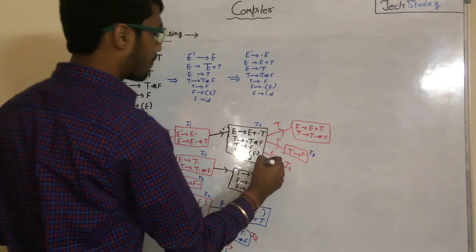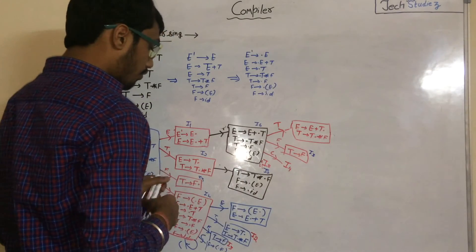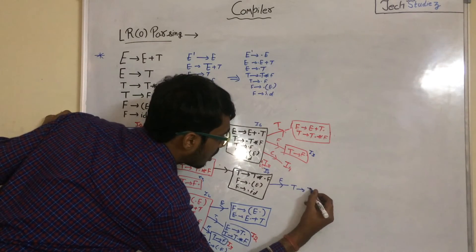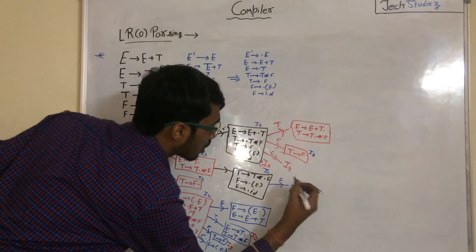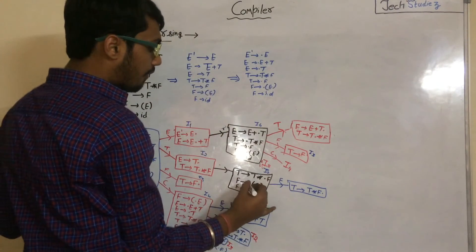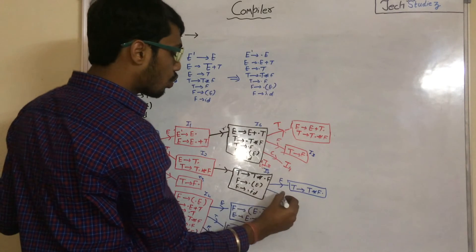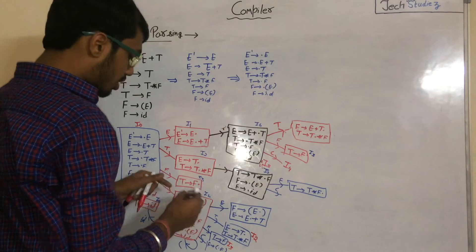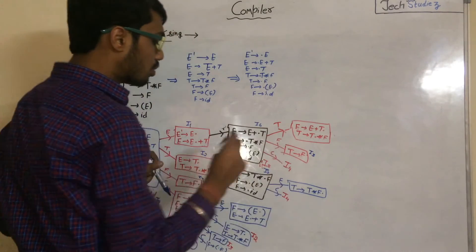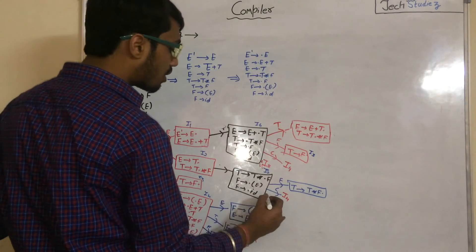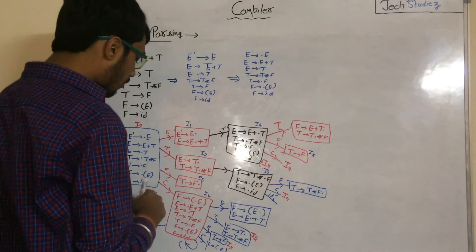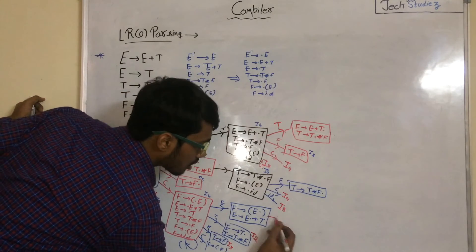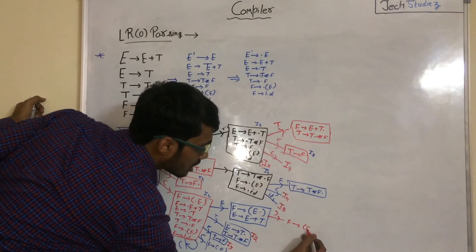On id we get I5. Apply GOTO with F in T to T star ·F — we get T to T star F·, which is a reduced move. If we apply GOTO with opening parenthesis on F to (·E), we get F to (·E) which is I4. On id we get I5. Apply GOTO with closing parenthesis — we get F to (E)· with dot at end, which is a reduced state.